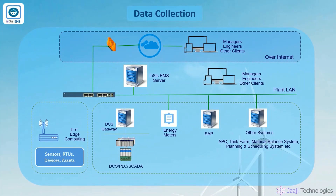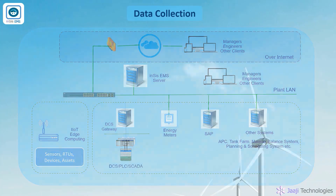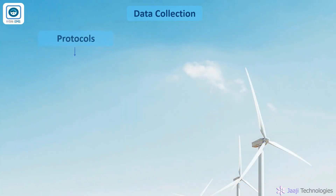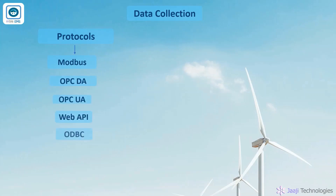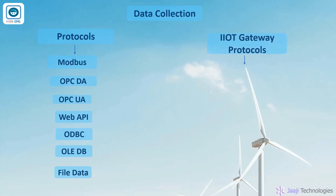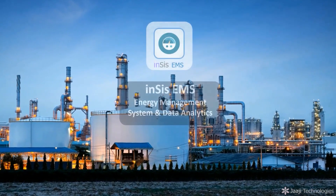INSYS EMS collects the data from energy meters, relays, RTUs, PLC, and SCADA systems at a higher frequency and stores it for unlimited periods. It supports various communication protocols like MODBUS, OPC DA, OPC UA, Web API, ODBC, OLEDB, file data, etc. Optionally, the data is collected from the remote system using IIoT gateways using various protocols like MQTT and HTTPS.